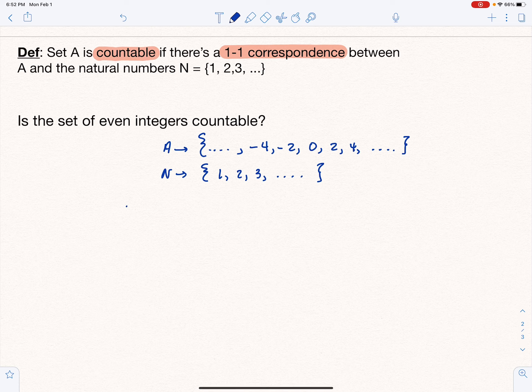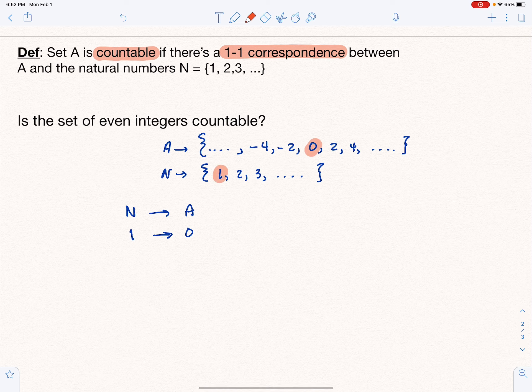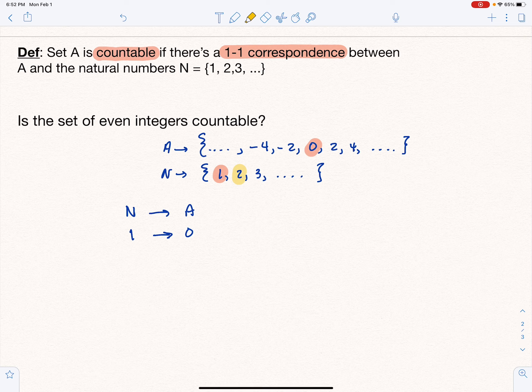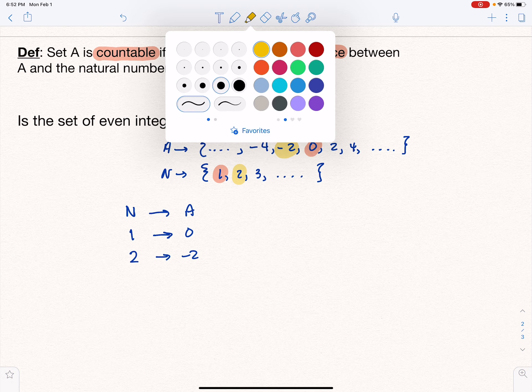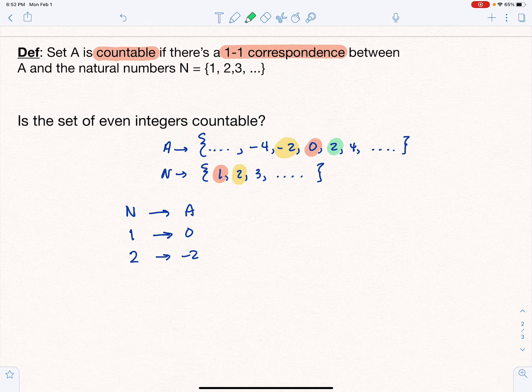I'm going to say that N goes to A, and I'm going to say one from the natural numbers goes to zero. So one goes to zero. Then two goes to negative two, and three goes to two.